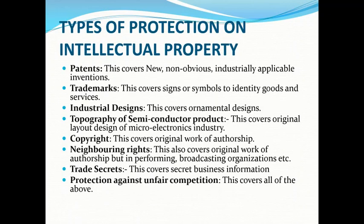Now, let's look at the different types of protection on intellectual property. You have patents, which covers new, non-obvious, industrially applicable inventions. You have trademarks, industrial designs, topography of semiconductor products, copyright itself, neighboring rights, trade secrets, and protection against unfair competition. These are the different types of rights.